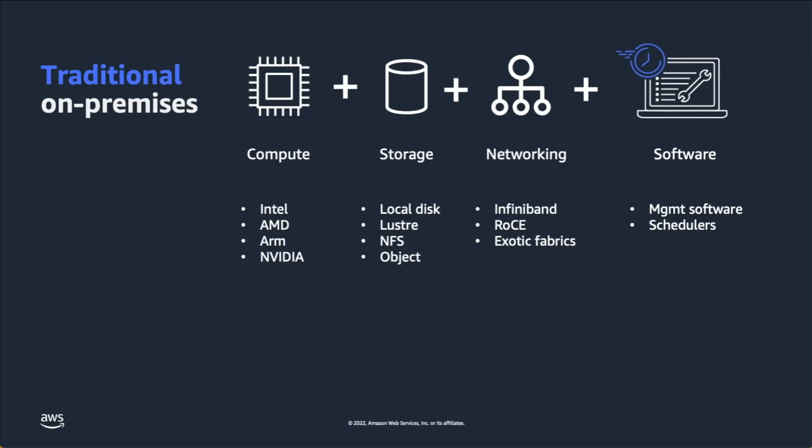You can have local disk attached to your nodes. You can have network-attached local disk, which is a thing we call elastic block storage — we'll get to that in a minute. You may have Lustre on-premises, NFS file shares for home directories or corporate data, and then of course there are object stores, which are used for a whole pile of things.